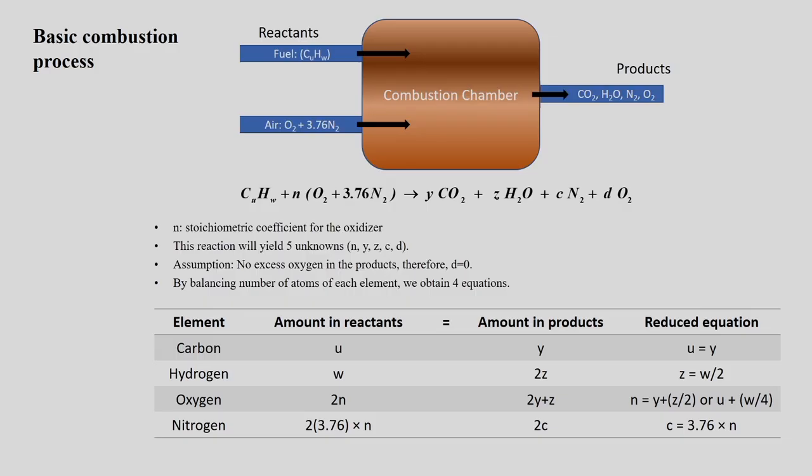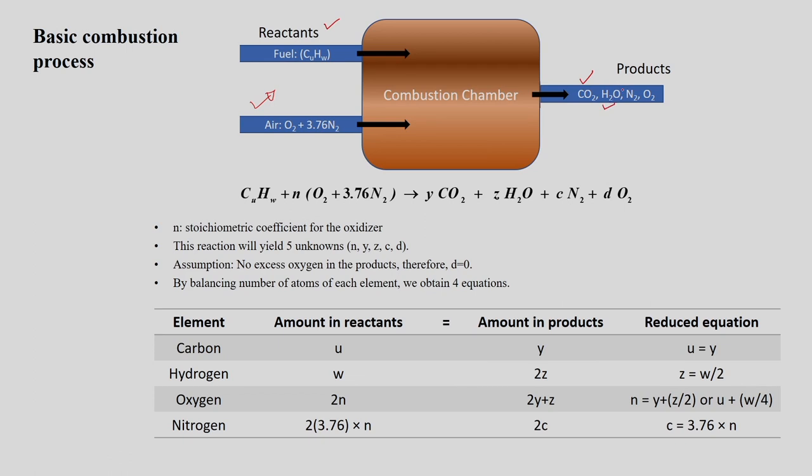The basic combustion process is described by fuel and the oxidizer. Fuel and oxidizer are the reactants in the system. In this process, the reactants undergo chemical reaction and form completely oxidized products in the form of CO2 and H2O, along with releasing a certain amount of heat. The products from this process are CO2, H2O, and nitrogen.